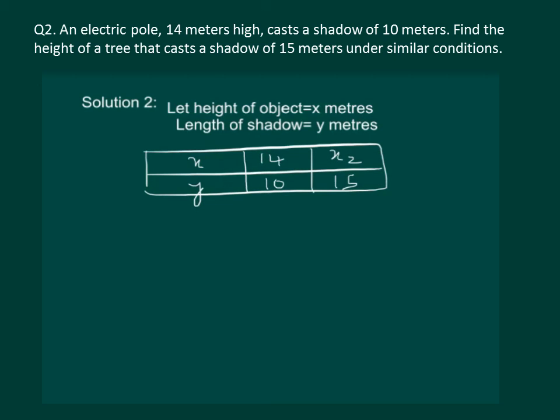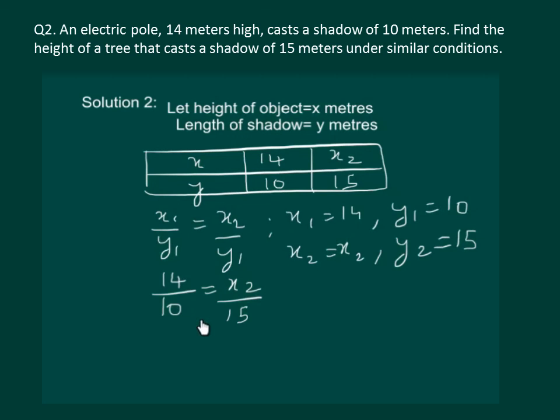Now using the property of direct proportion we know that x1 by y1 should be equal to x2 by y2 where x1 is 14, y1 is 10, x2 we have to find out and y2 is equal to 15. So let us substitute the values and solve it. After substitution we get the following expression. Next step is to cross multiply and we will get 14 times 15 whole divided by 10 should be equal to x2.